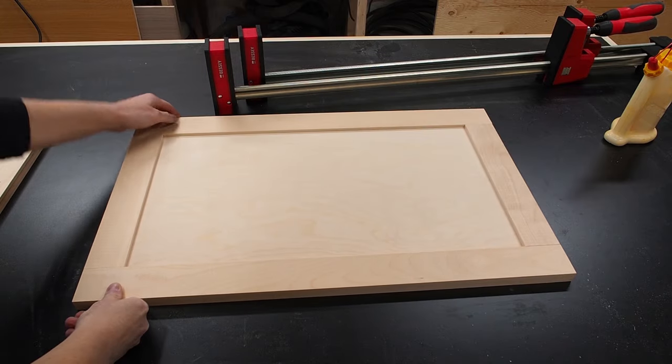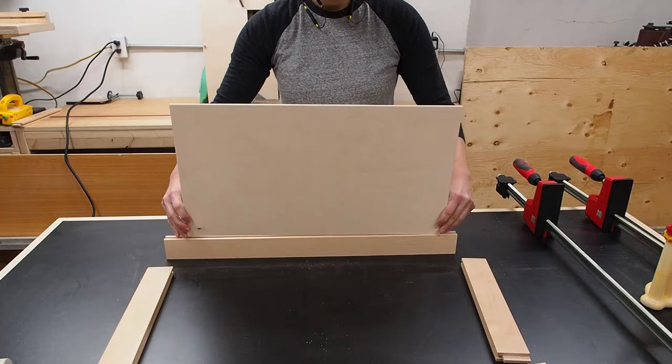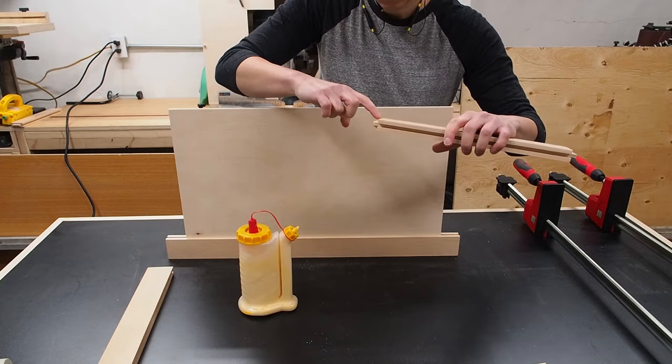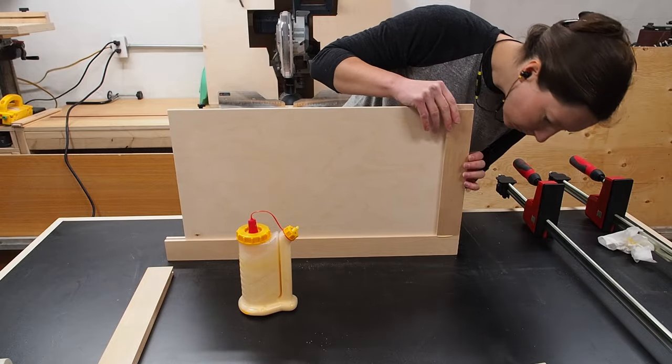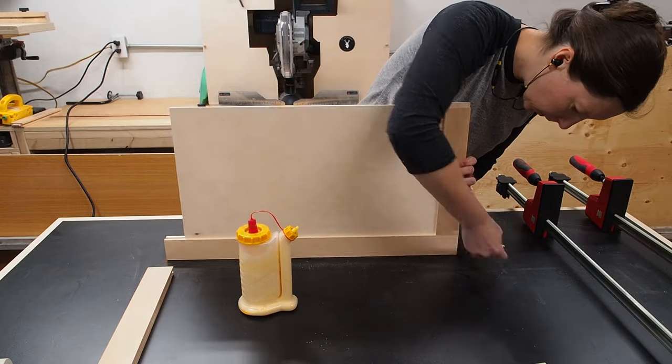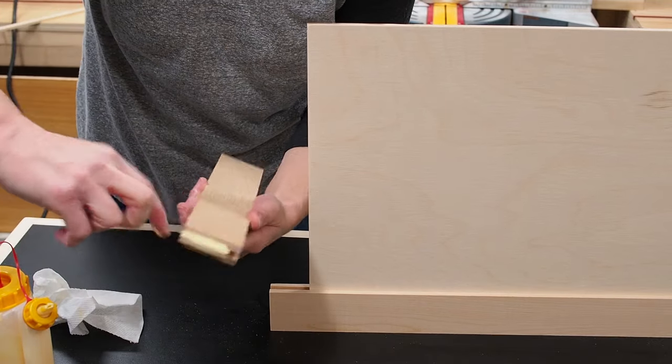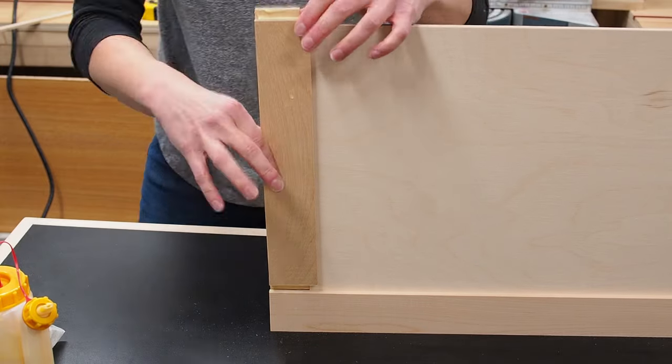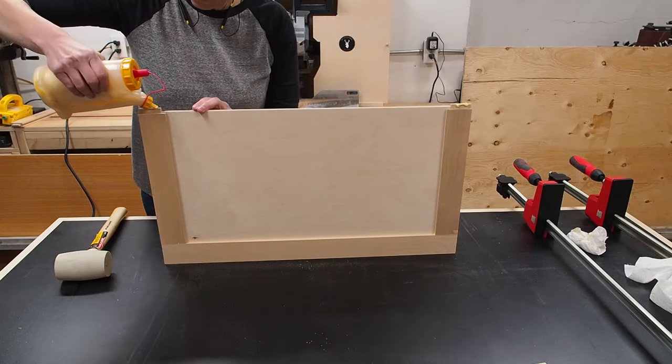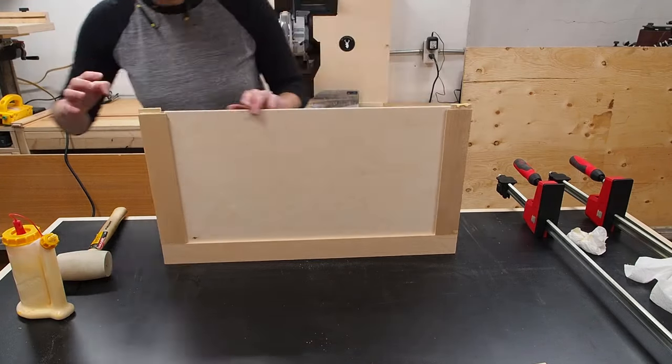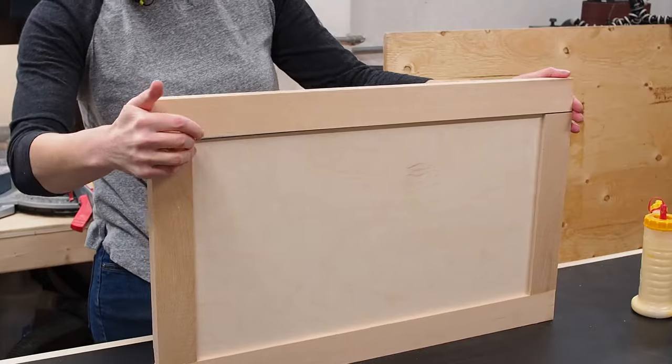So after doing a dry fit to make sure everything fit without issue, it's time to glue it up. I'm not going to glue the center panel to allow for any potential movement, I'm only going to apply glue to the tongues, spreading the glue all around, and then slip it into place. I made sure to wipe off any squeeze out, and then repeated the same for the other side, applying glue only to the tongue. I applied some more glue, and slid on the last piece, and used a rubber mallet to help tap it into place, and make a few adjustments until everything lined up.